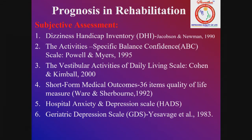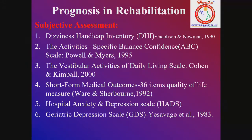If doing exercise regularly, how do we know if the person is improving? These assessment tools help: disease and handicap inventory to check physical, emotional, and functional handicap; Activities-specific Balance Confidence scale; Vestibular Activities of Daily Living scale; Short Form Medical Outcomes; Hospital Anxiety and Depression scale; and Geriatric Depression Scale. I use the Disease and Handicap Inventory and Geriatric Depression Scale to check levels. After exercise, training, and counseling sessions, their handicap levels reduce and they improve.